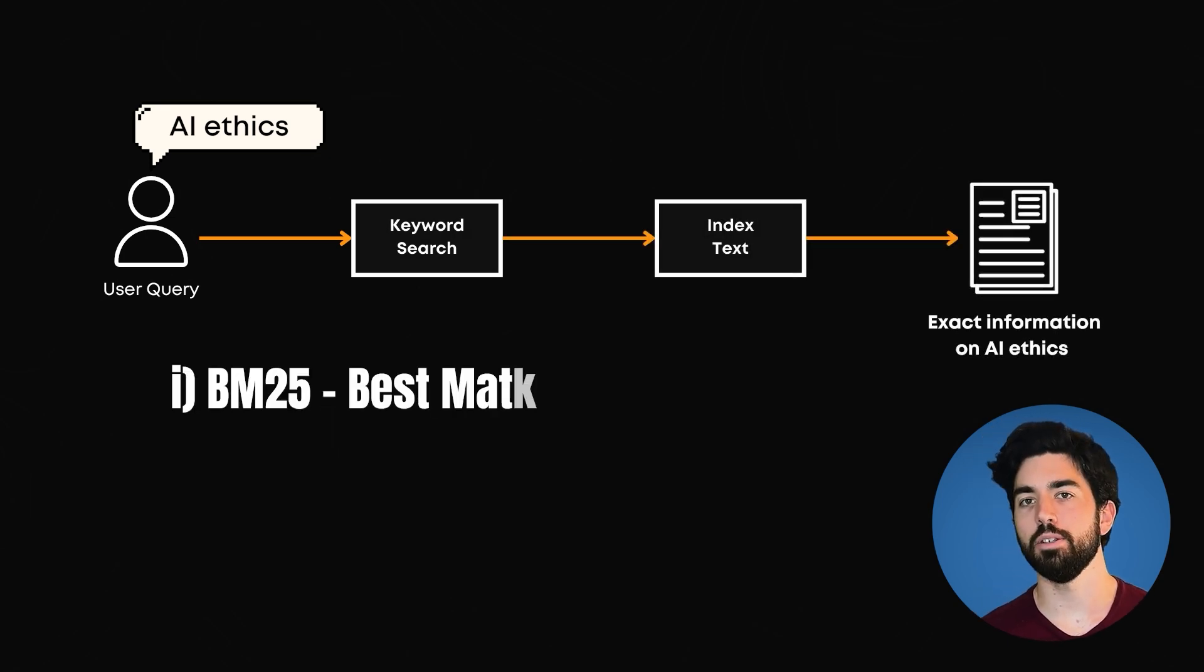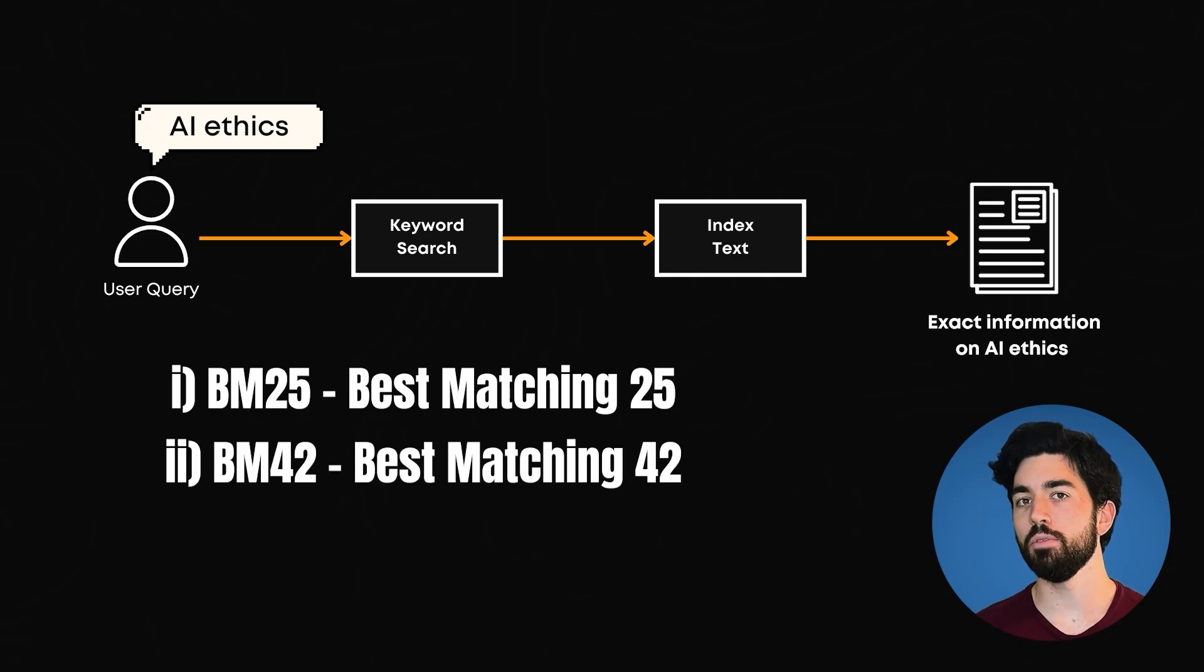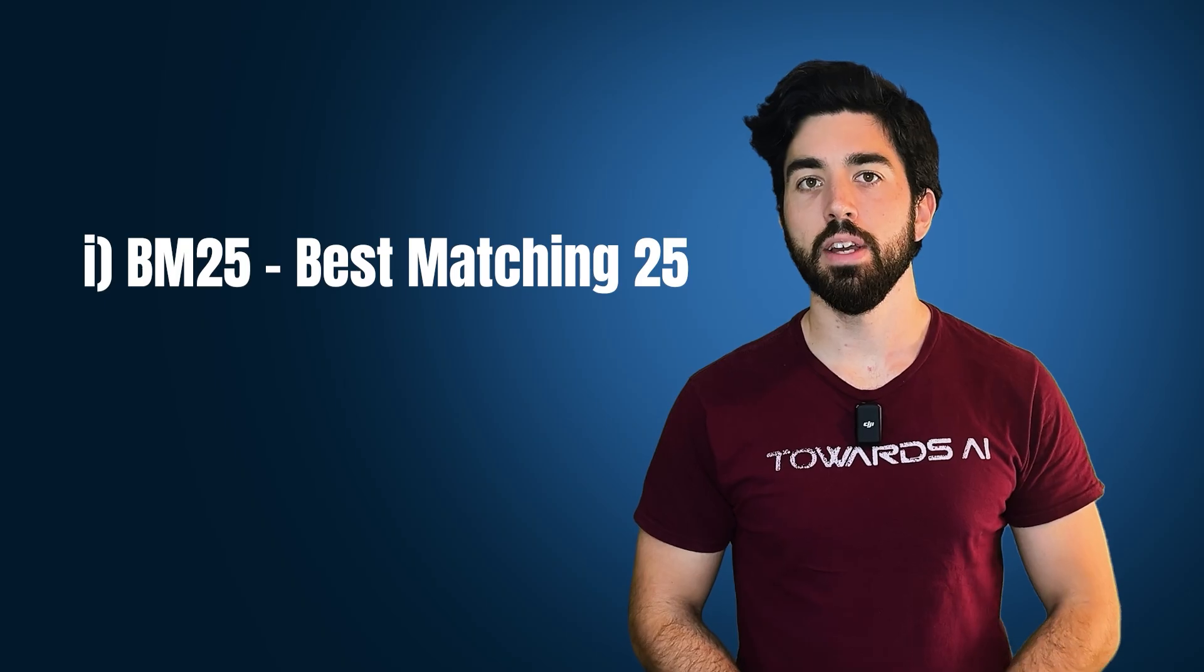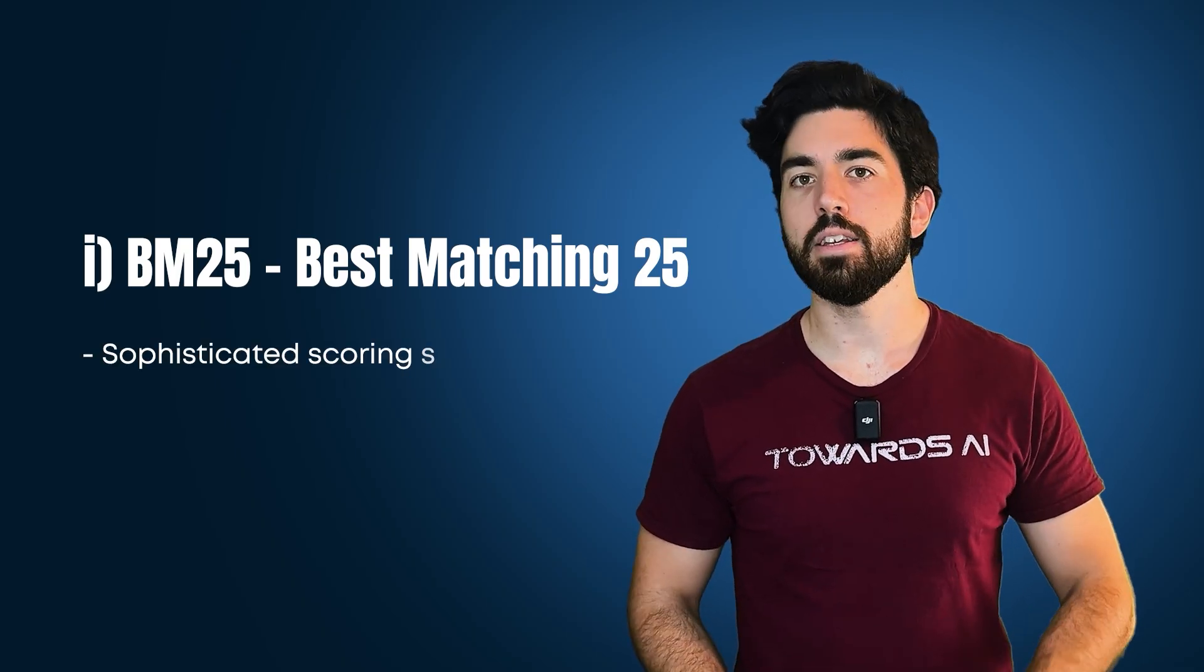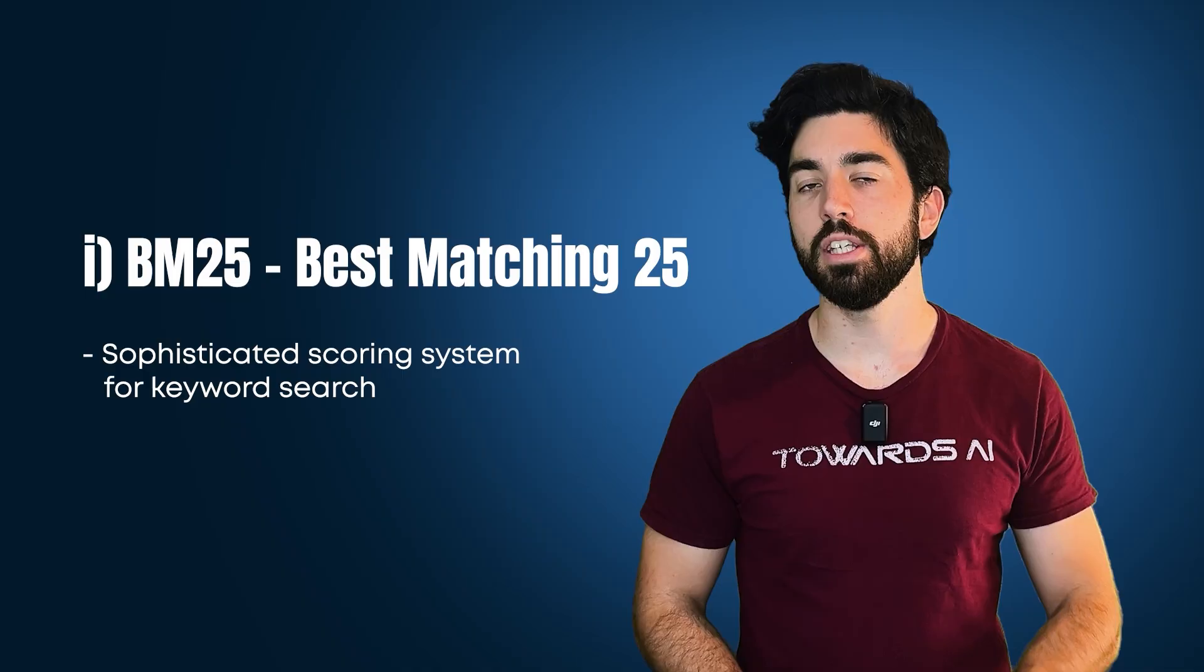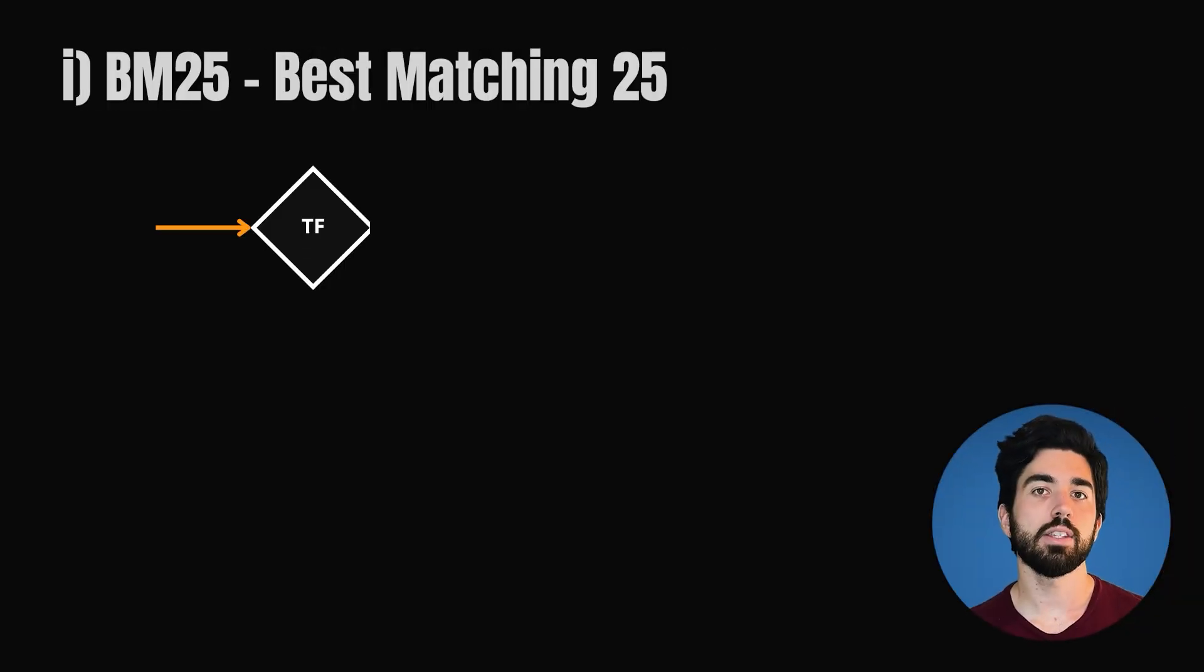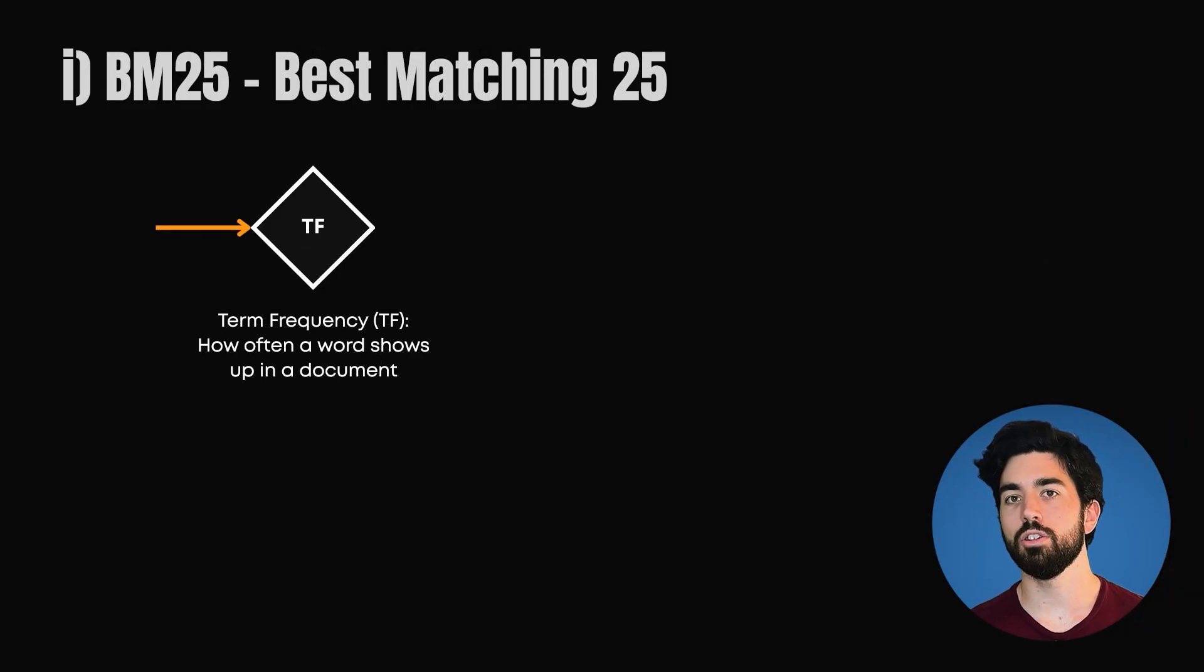Two popular algorithms for keyword search are BM25 and BM42. BM25, or best matching 25, is a ranking function used in information retrieval. It's like a sophisticated scoring system for keyword search. First, it looks at how often a word shows up in a document, which is called term frequency, or TF.